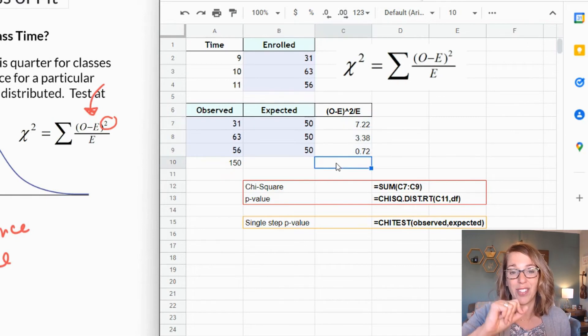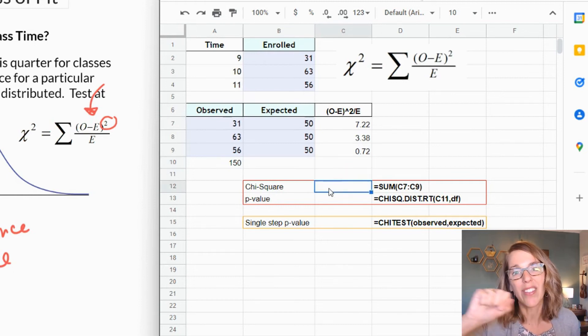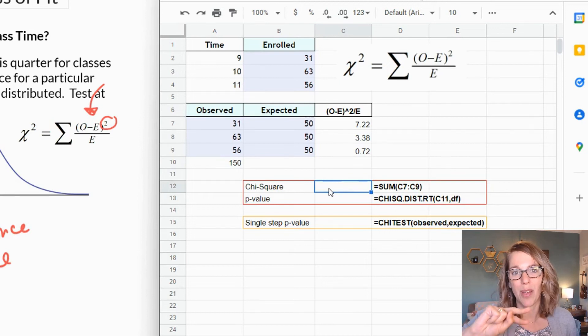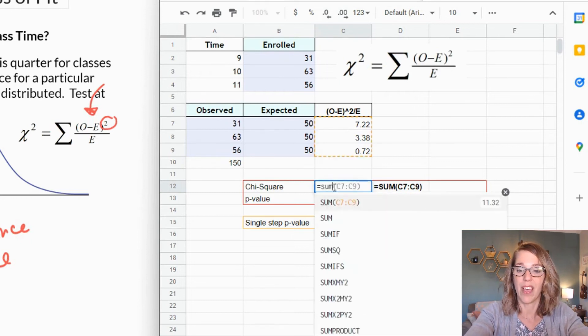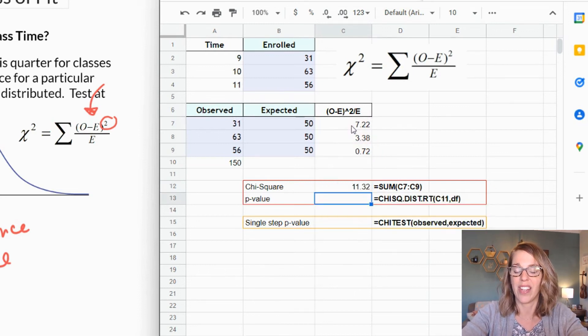I've got one more step here to get to the chi-square and that's to add all of these together. So in the red box is a two-step process. The first step gets you to the chi-square statistic, so if you need that value this is the way to go. The second step in the red box is the p-value and I'm going to take you to the orange box which is a single step p-value method and this would work great if you don't need the chi-square measure. So my chi-square here is going to be equal to the sum of those values above. So I'm going to go parenthesis, I'm going to click, hold and drag over those values and then hit enter. This is my chi-square value.